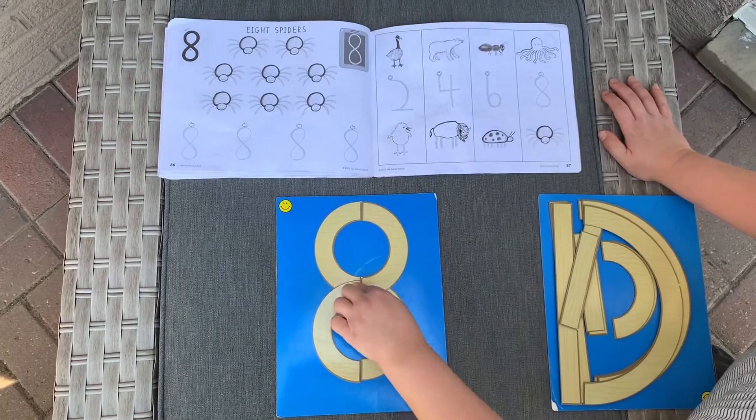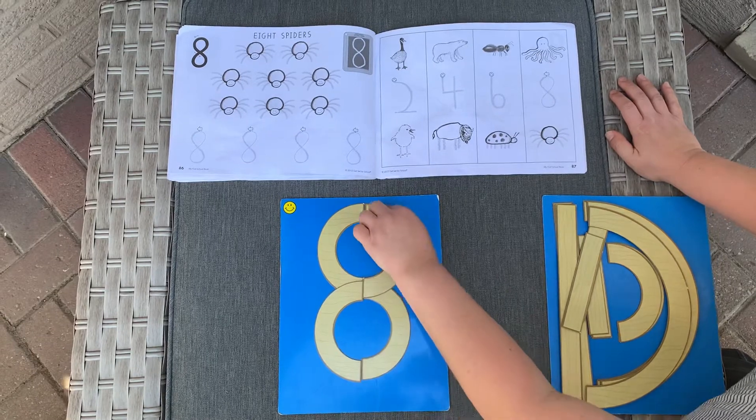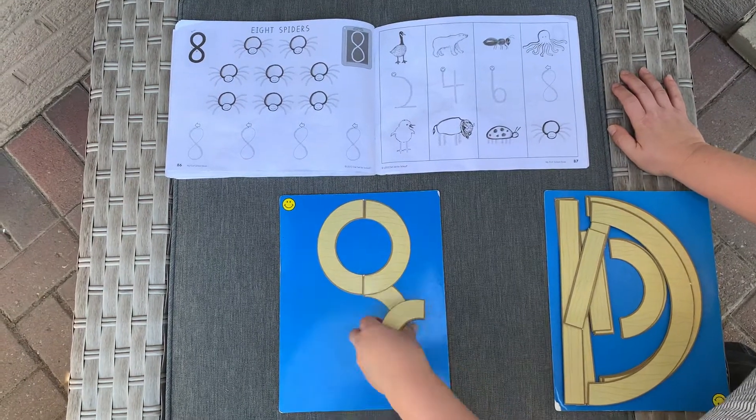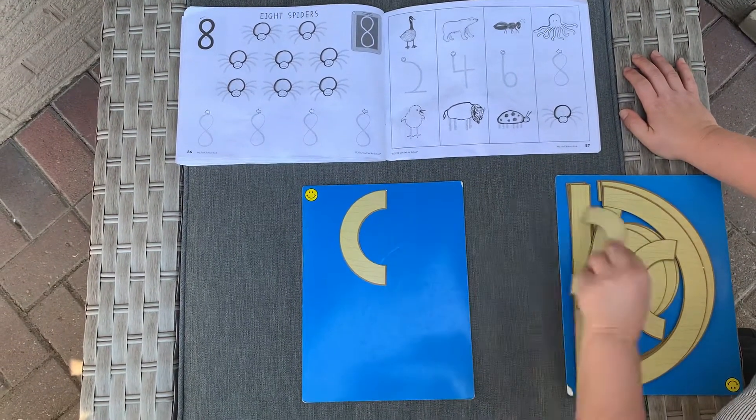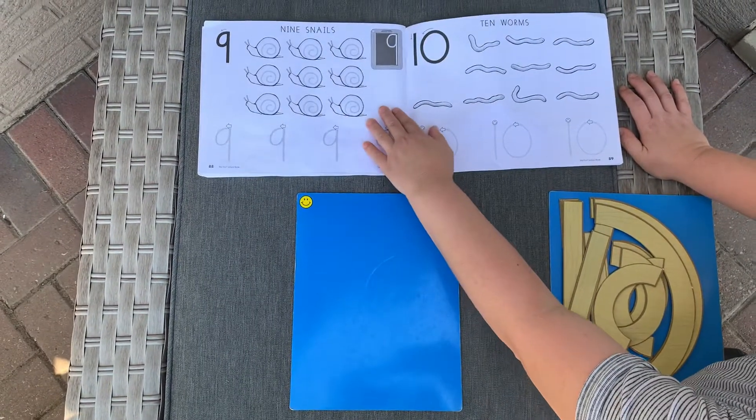Little curve one way, little curve the opposite way, little curve one way, little curve the opposite way. Great job. Let's go on to number nine.